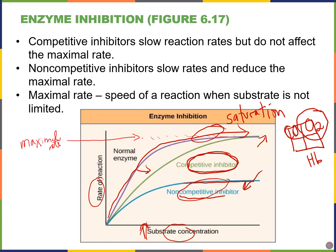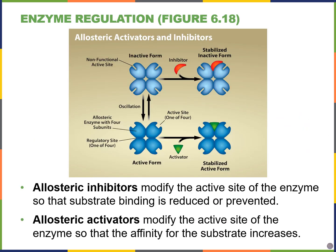You cannot outcompete a noncompetitive inhibitor. Noncompetitive inhibitors bind to a different site called the allosteric site, causing allosteric inhibition — they are also known as allosteric inhibitors. The allosteric inhibitor is not binding to the active site; instead, it binds to the allosteric site. In the case of this four-subunit enzyme, the allosteric inhibitor stabilizes the inactive form where the active site is closed, so the substrate cannot bind and the reaction does not happen.